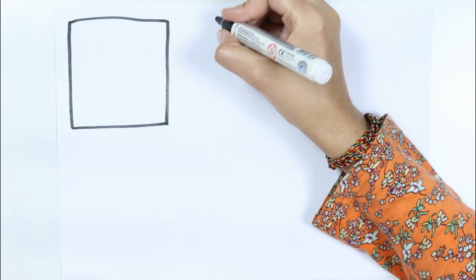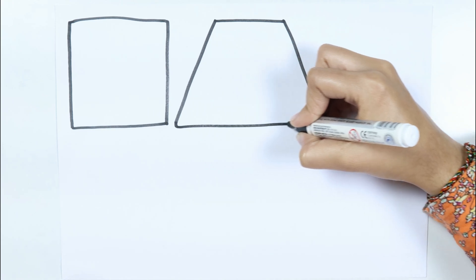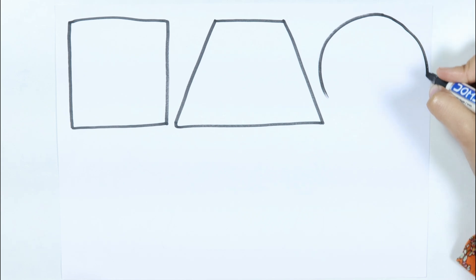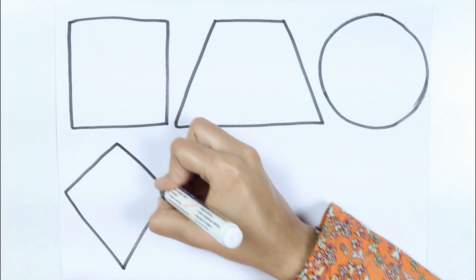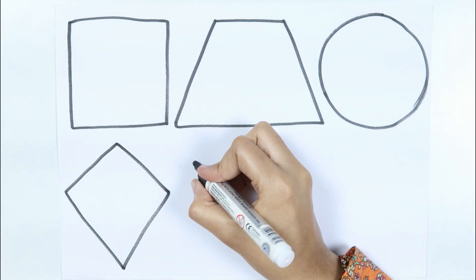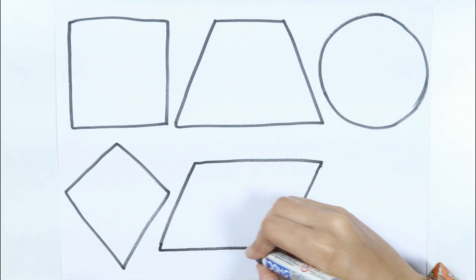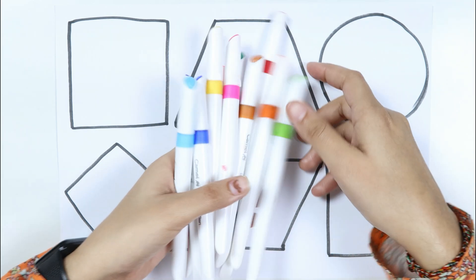Square, trapezoid, like a diamond, circle, kite, parallelogram, right triangle. Let's learn some colors.